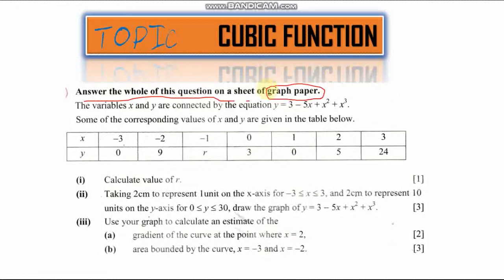The variables x and y are connected by the equation. We've been given a general equation that connects the corresponding points given in the table below. So it means one value here — if I insert it into the equation — will give me the other value, either from the top or the bottom of the table.